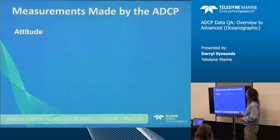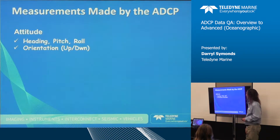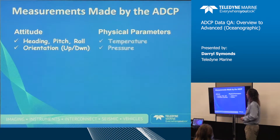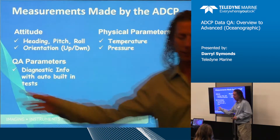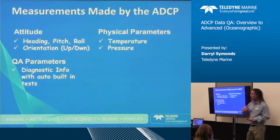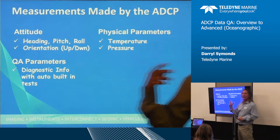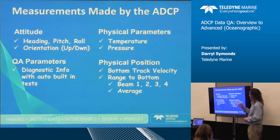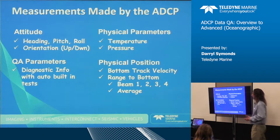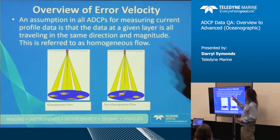We also collect attitude data: heading, pitch, and roll; orientation up/down; physical parameters like temperature and pressure. We have quality parameters, a massive info area, an area sample, a system check, and we record any error data. We have physical position, bottom tracking range to bottom, and GPS.